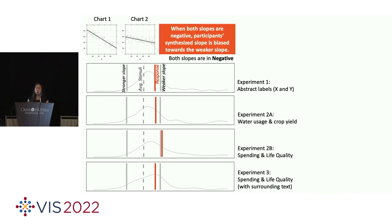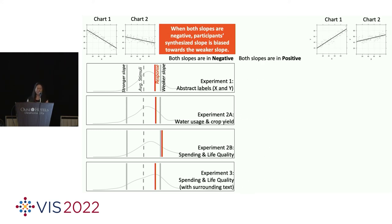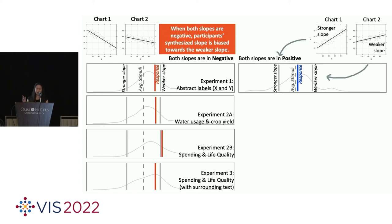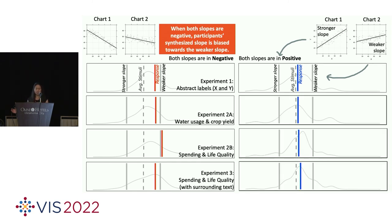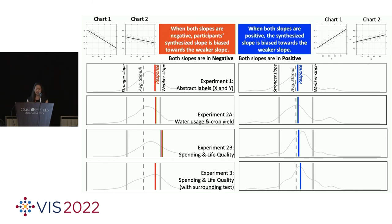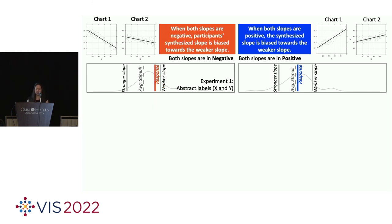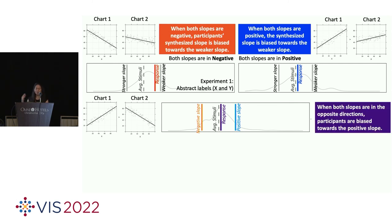So, just to reiterate that, when both slopes are negative, people's synthesis behavior seems to be biased towards that weaker slope. They think that the synthesized slope should more closely resemble that weaker one. And we, spoiler alert, found very similar result for the positive version of this. I'm just going to plot everything the same way. There's the stronger slope on the left and the weaker slope on the right. And here are the results for all these conditions. And you see that the effect sizes are very similar across the board. And participants seem to think that the synthesized slope would more closely resemble the weaker one. And what's interesting is that the effect seems to be stronger when the slopes are negative compared to when the slopes are both positive.